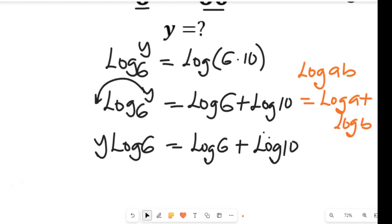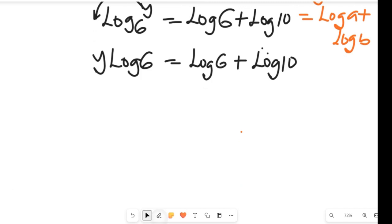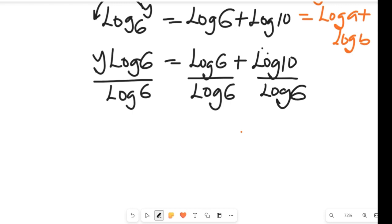Now, we're going to simplify this by dividing both sides by log 6. If we divide both sides by log 6, we're going to have log 6 divided by log 6. So this expression will give us y on the left-hand side equal to 1 plus log 10 divided by log 6.